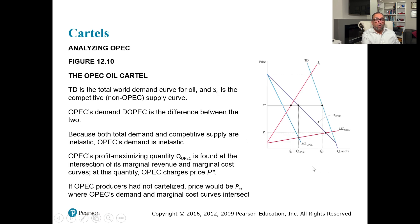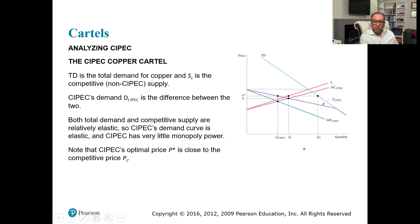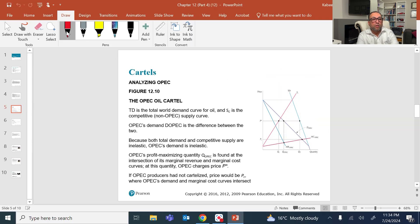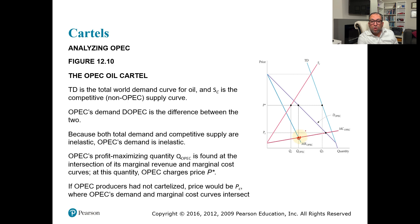Looking at the world demand for oil, TD is the total demand curve. The purple line is the demand curve for OPEC countries' oil, and there is also a marginal revenue curve for OPEC. OPEC decides their quantity — OPEC quantity — based on where marginal cost meets marginal revenue. And based on that quantity, they set a price.